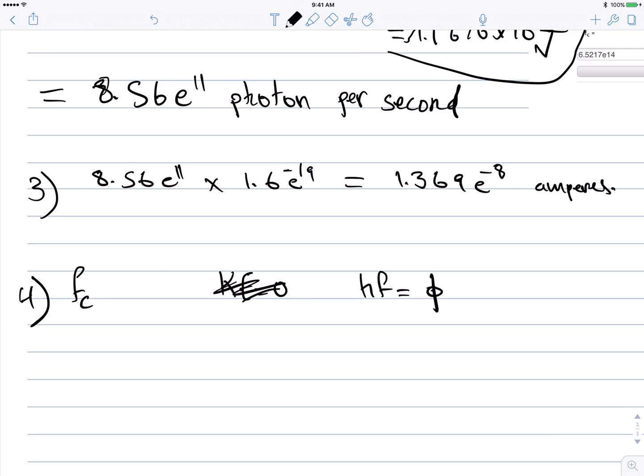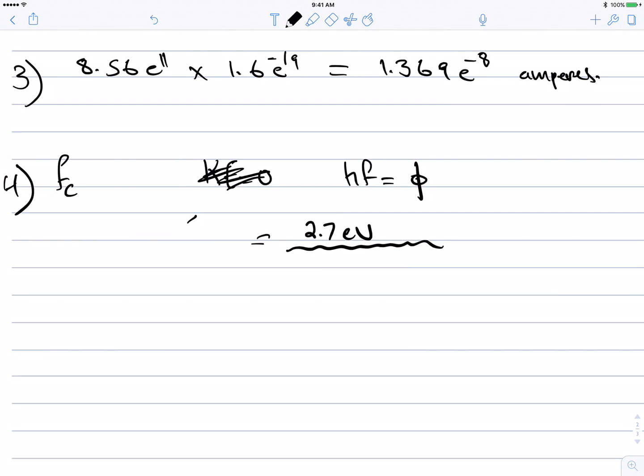The work function we have is 2.7 electron volts. To find the frequency we need to divide this by h. H in this case is 4.14 times 10 to the negative 15 electron volt seconds. This will give us 6.5 times 10 to the 14 hertz.